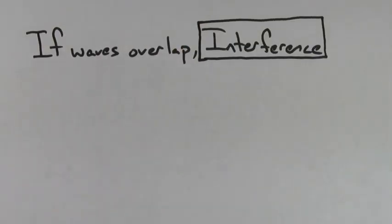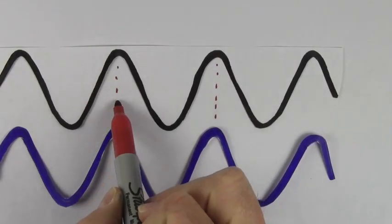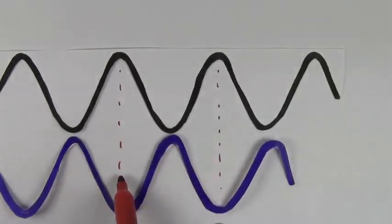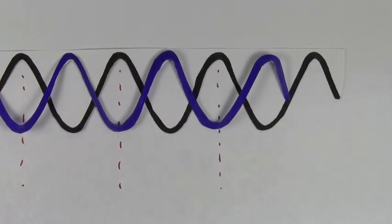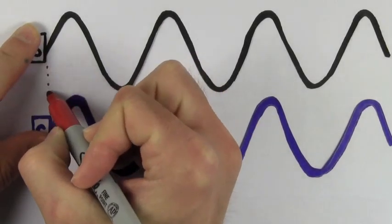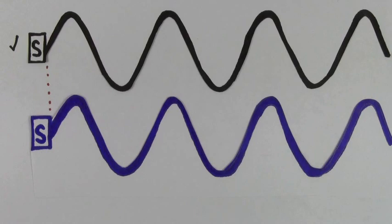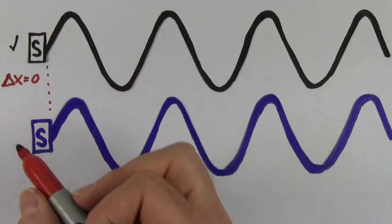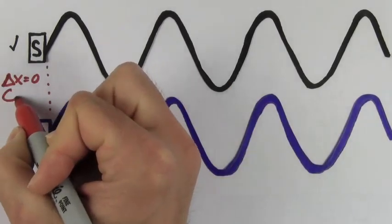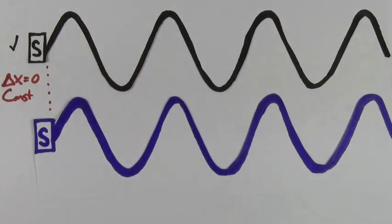If two waves overlap, you get wave interference. If the peaks of the two waves line up, you get constructive interference. If the peaks of one wave line up with the valleys of the other wave, you get destructive interference. If you start with two identical speakers sending out the same wavelength, the two waves travel the same distance to any observer to the right, so the path length difference is zero, and that gives you constructive interference.